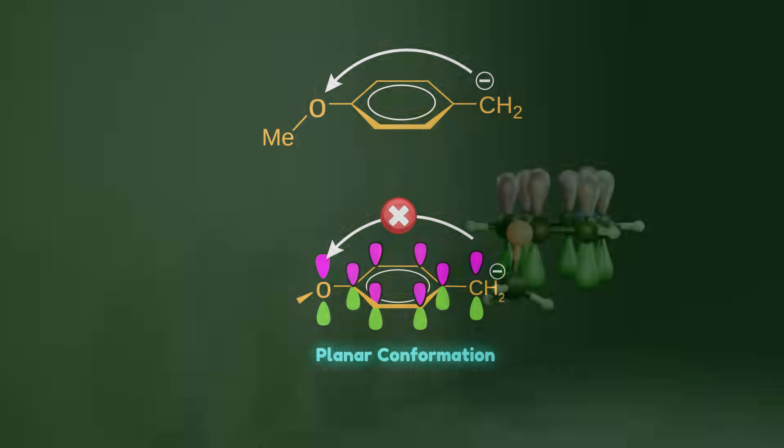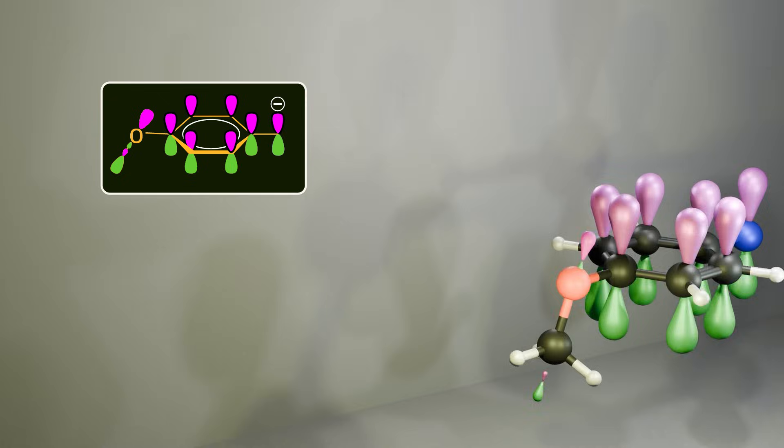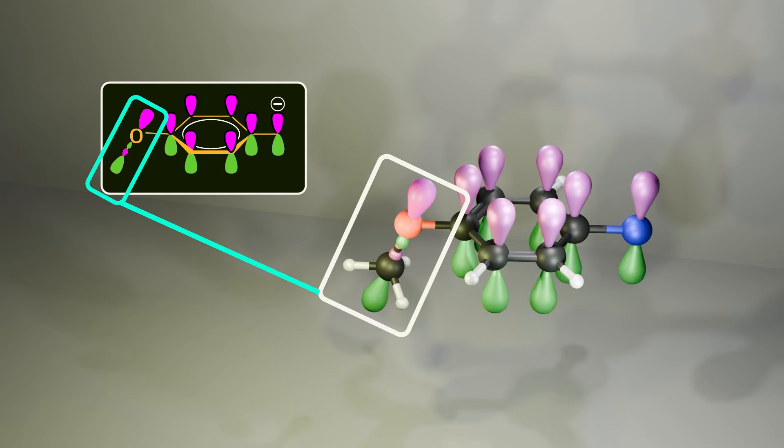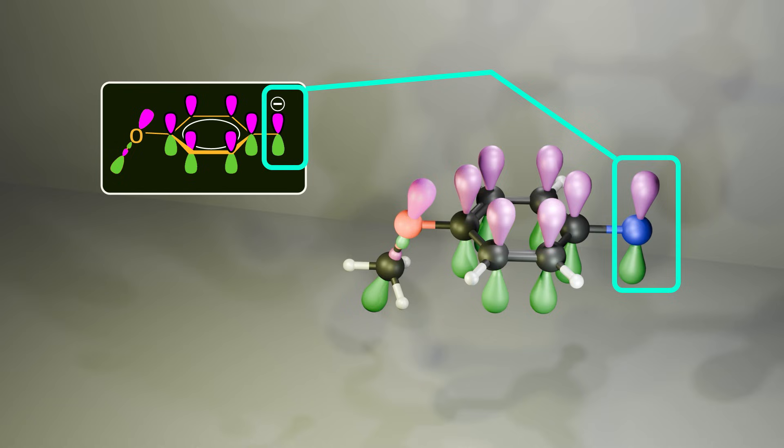Look at the perpendicular conformation. As you see, the empty anti-bonding carbon-oxygen bond is aligned to the phenyl ring, and it's ready to accept electrons from the carboanion.